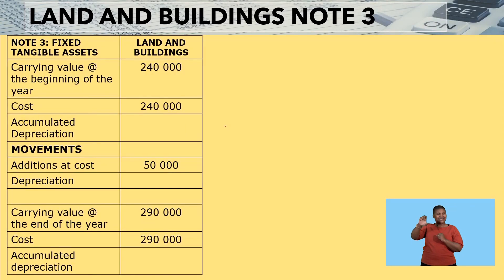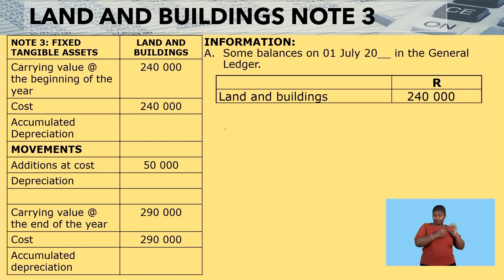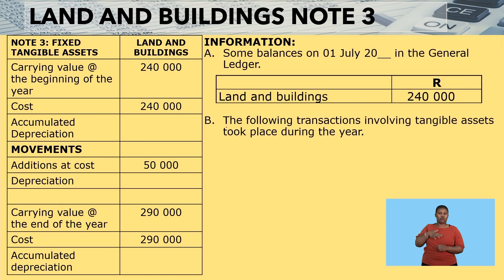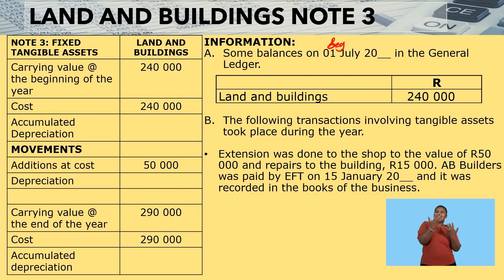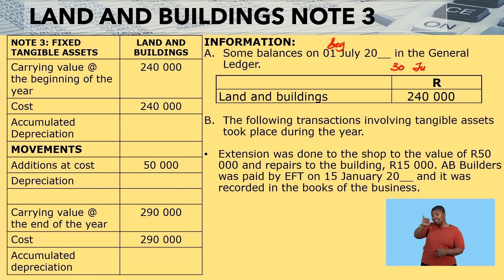I have a fixed tangible asset note here, and I want to go through the information together with you. Some balances are given on the first of July, which is the beginning of the financial year. That means this financial year will end on the 30th of June.